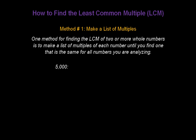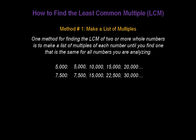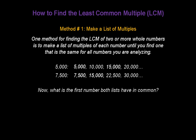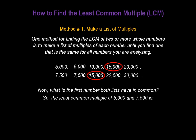Let's say we want to find the least common multiple of five thousand and seven thousand five hundred. Let's start writing multiples of five thousand first, starting with five thousand and going by increments of five thousand: five thousand, ten thousand, fifteen thousand, twenty thousand, and so forth. Now, let's find multiples of seven thousand five hundred, starting with seven thousand five hundred and going by increments of seven thousand five hundred, to fifteen thousand, twenty-two thousand five hundred, thirty thousand, and so forth. We've written enough numbers to figure out the first number that both lists have in common. The first number that both have in common is 15,000. That is the least common multiple of 5,000 and 7,500.